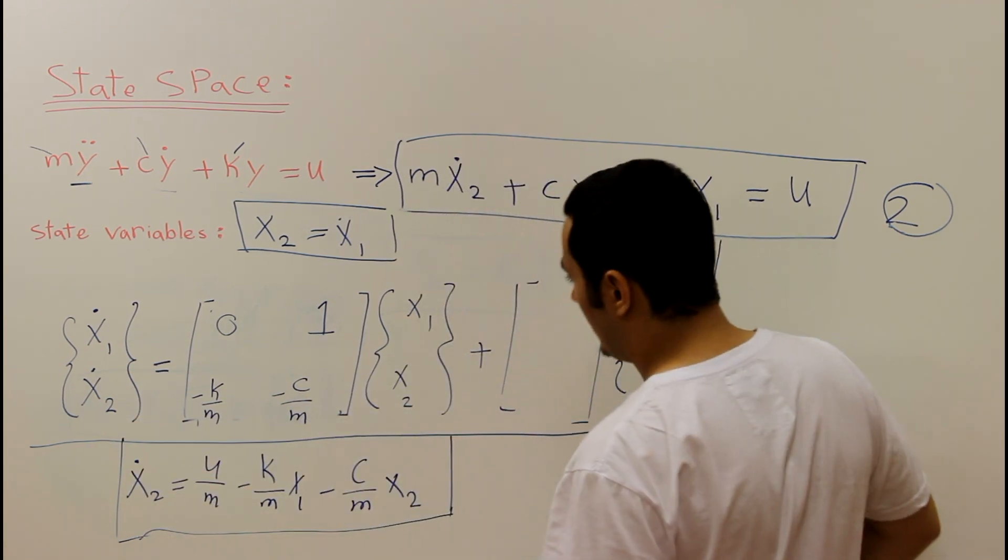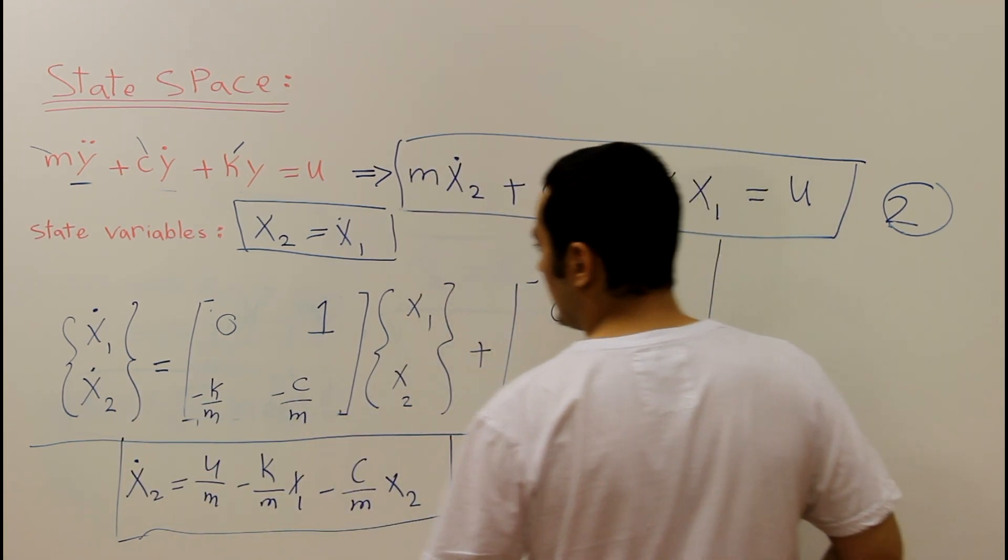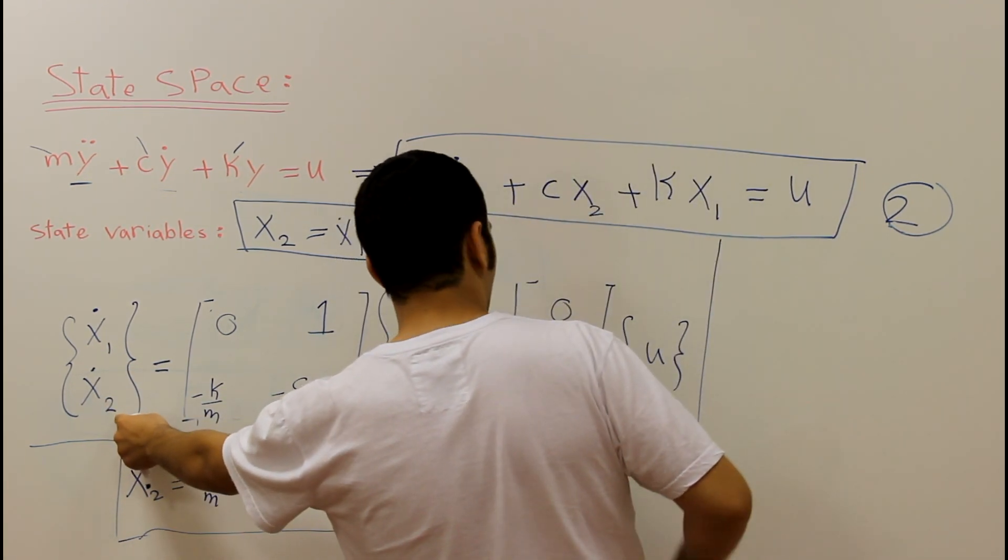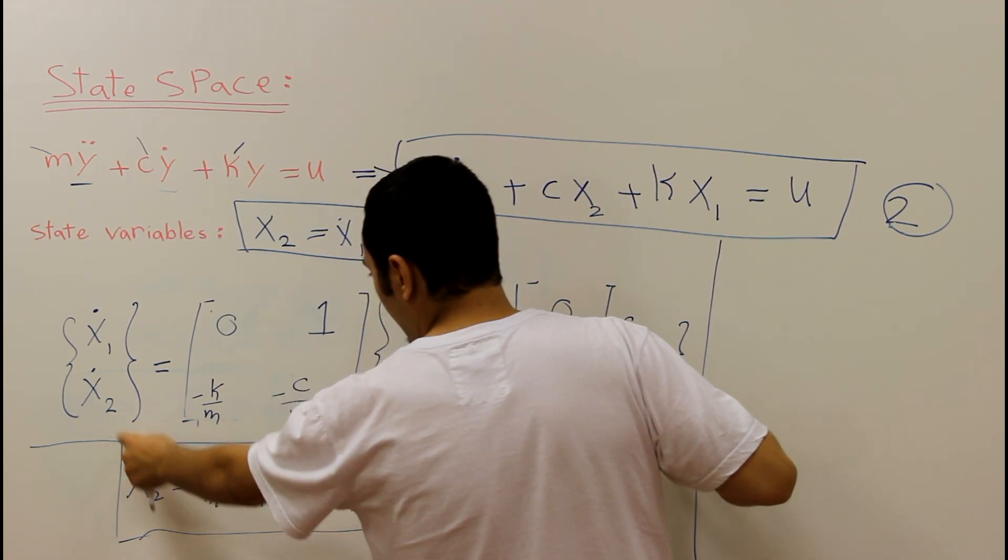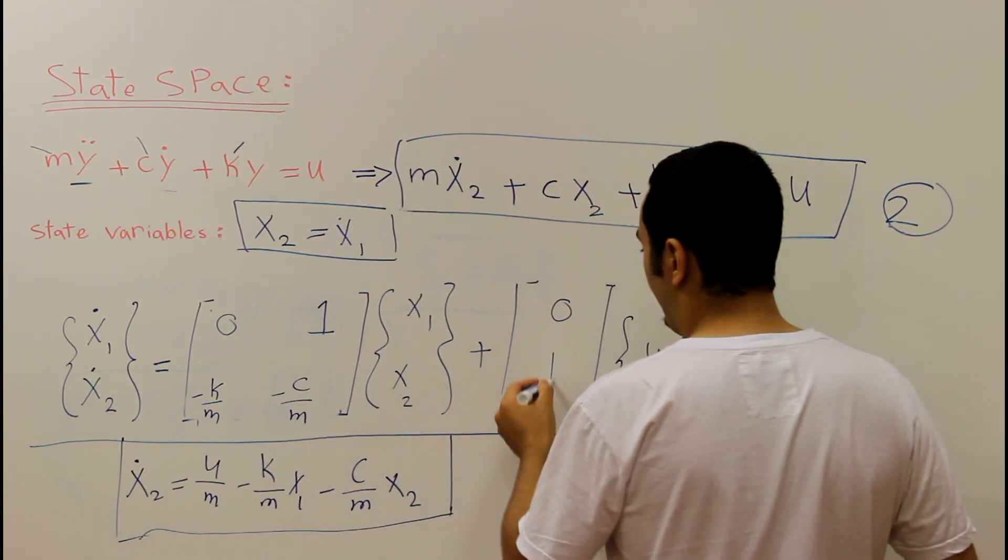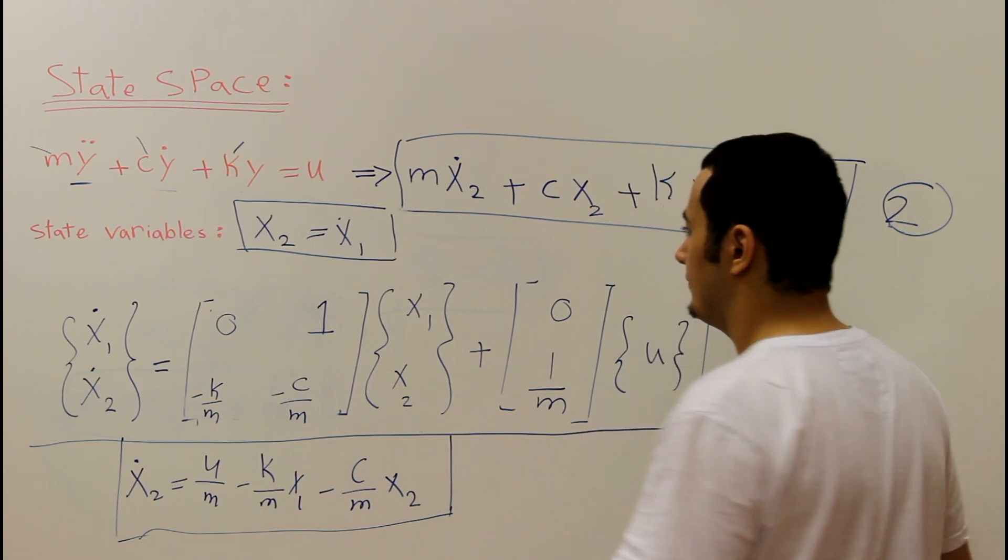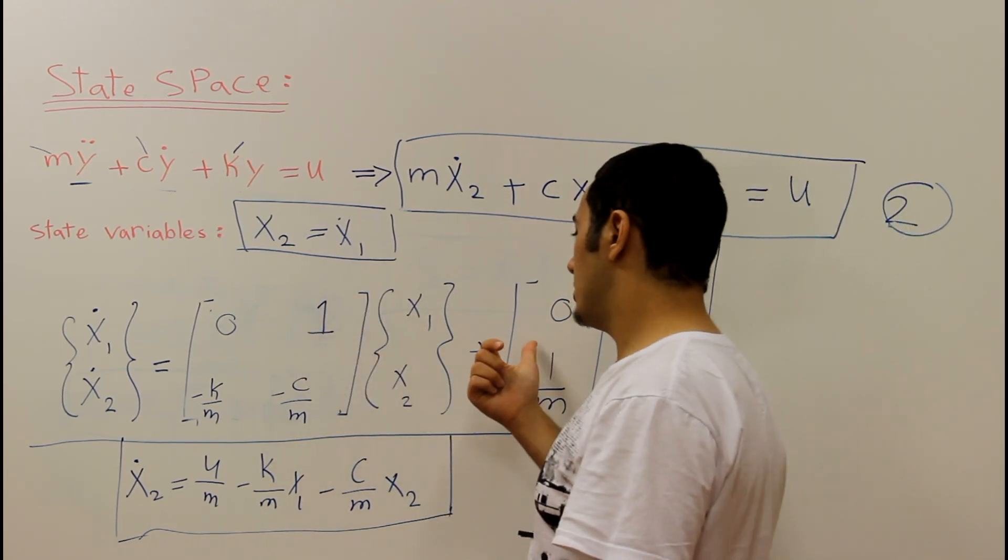x1 dot in terms of u is nothing. x2 dot in terms of u is one over m.